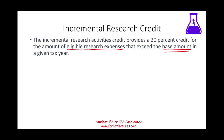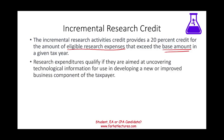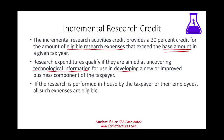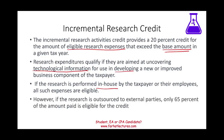Any amount you spend above the base amount — in other words, if you are spending quite a bit of money on research and development — the government is going to give you a credit. Research expenditures qualify if they are aimed at discovering new technological information for use in developing or improving a business component of the taxpayer. If the research is performed in-house using your employees and equipment, all expenses are eligible as qualified research expenses.